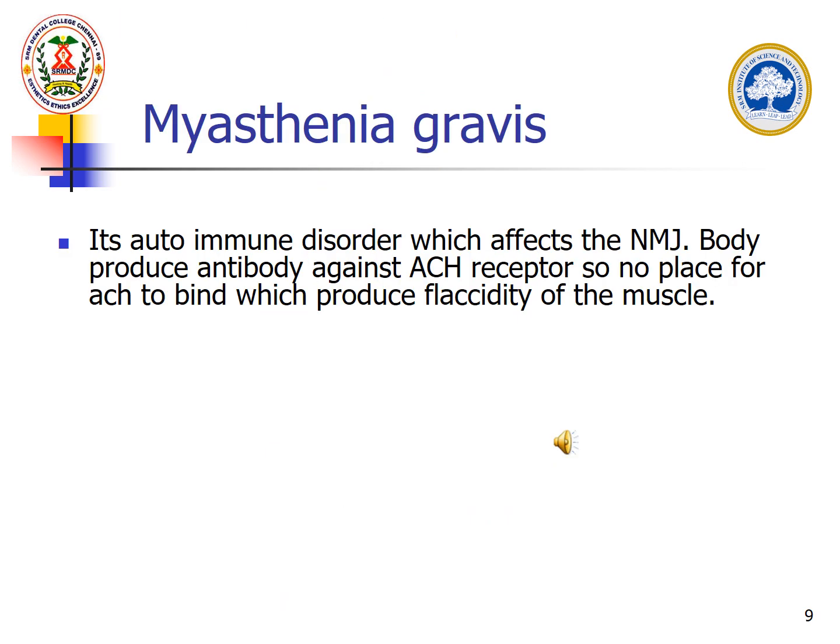For applied physiology: Myasthenia gravis is a neuromuscular junction disorder. It is considered an autoimmune condition. It is characterized by weakness and fatigability of the skeletal muscle that gradually worsens. It mainly affects the acetylcholine receptors present in the muscle — the body produces antibodies against these receptors, so acetylcholine cannot bind with the muscle. As a result, there is no proper excitation and contraction in the muscle, producing progressive weakness. Thank you.